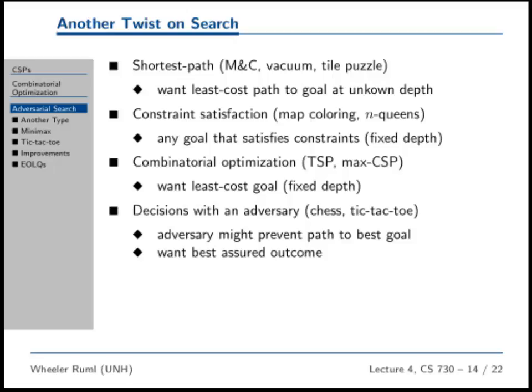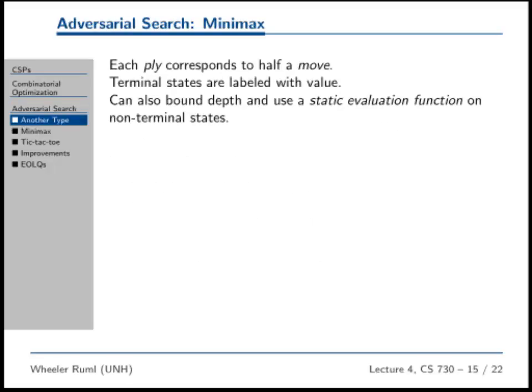Now, there are a lot of ways of going about this, and there are zillion algorithms for dealing with games. We're going to do the basics. The point of view that we're going to take is that we want the best assured outcome. So no matter what the opponent does, we're going to have the best outcome for ourselves as possible. It's a very conservative approach.